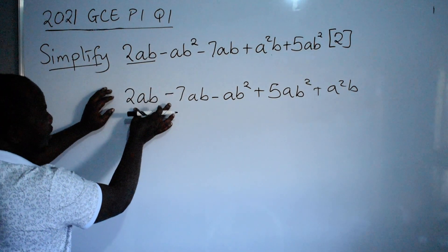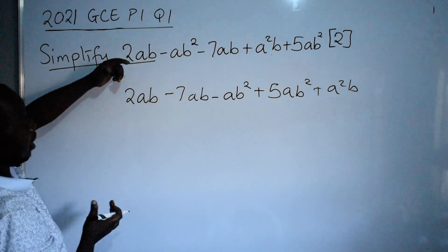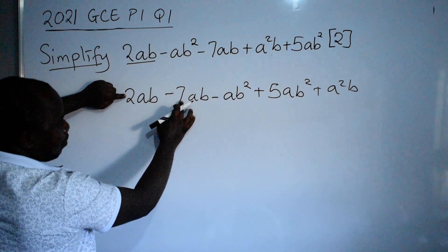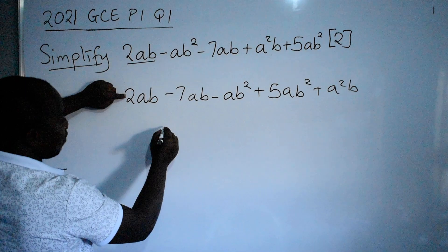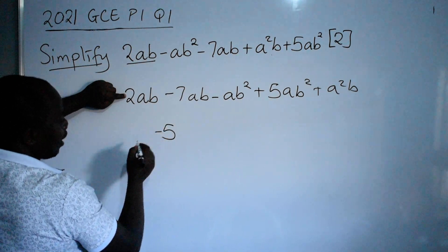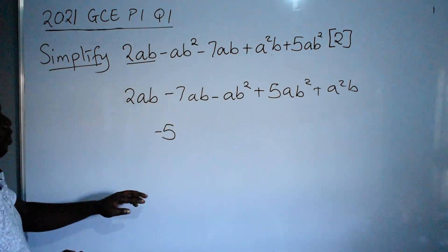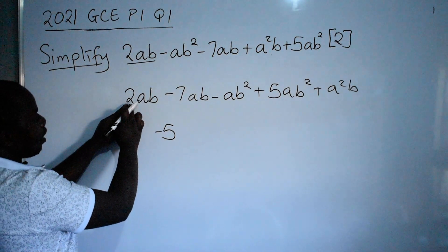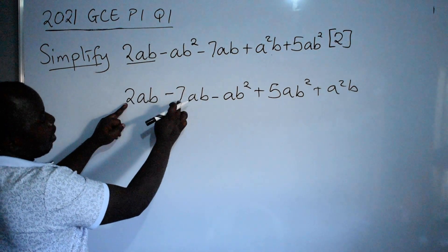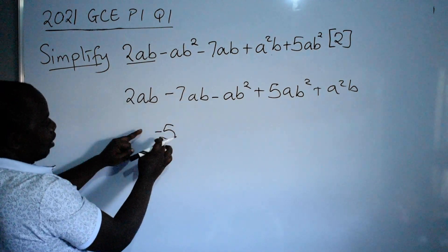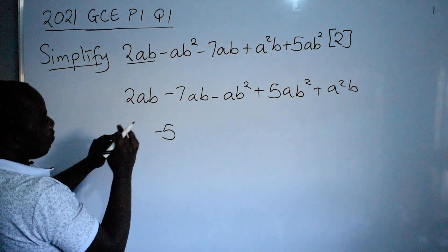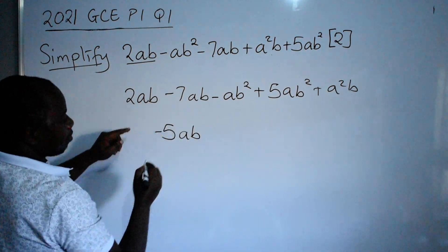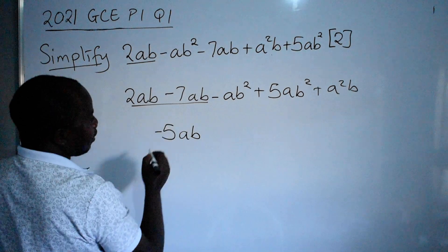Since these are like terms, we can subtract. 2 minus 7 — what is the answer? Negative 5. So this will give us negative 5 when we subtract 2 minus 7. Negative 5, with variables ab. So we write negative 5ab. You are done with this pair.